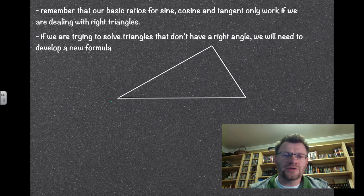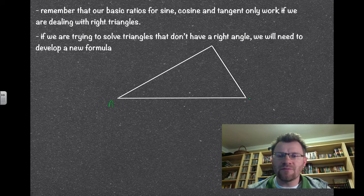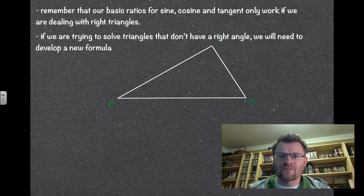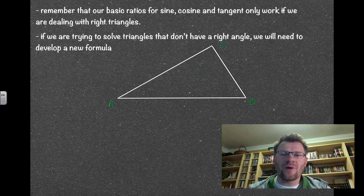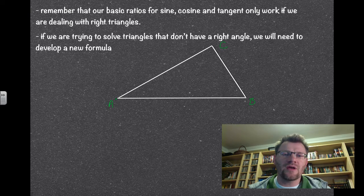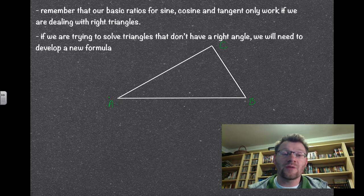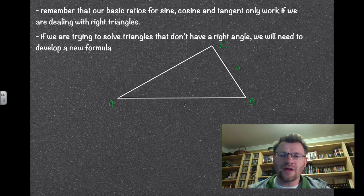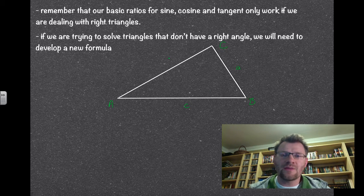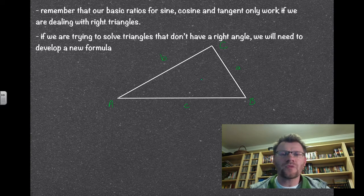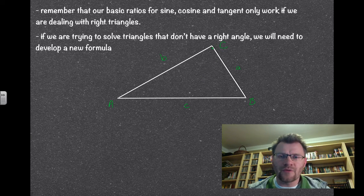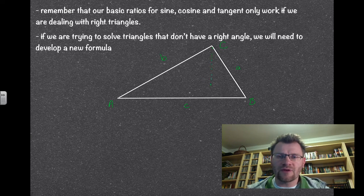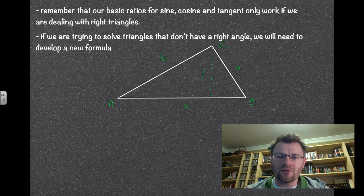So here's a triangle, we're going to label it ABC. Every angle is labeled with a capital letter and every side is labeled with a lowercase letter, so that's little a, this is little c, and this is little b. We're going to draw a line straight down here, and we know that this is called the height, so we're going to call this h.